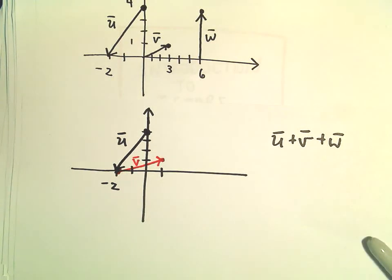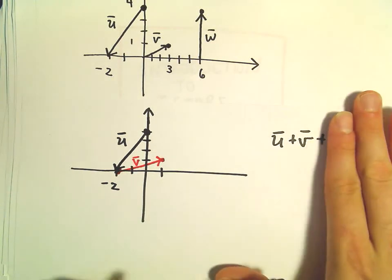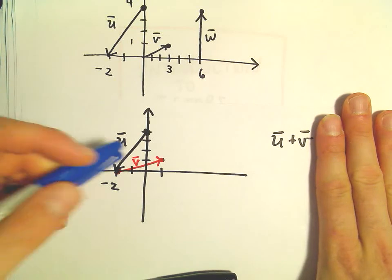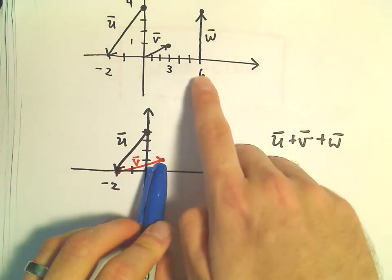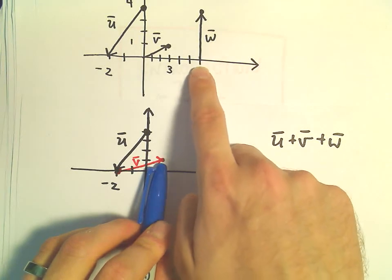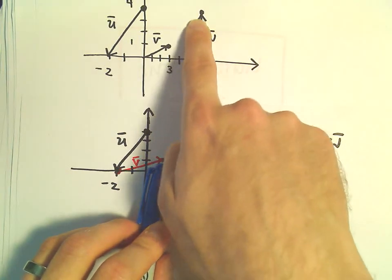And now what I'm going to do is add on vector w. So wherever v stops, w is going to start. All vector w does is basically just go up 4 units vertically.